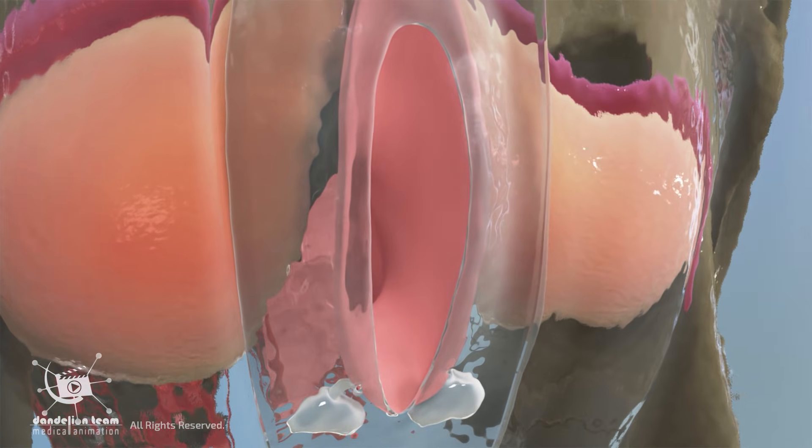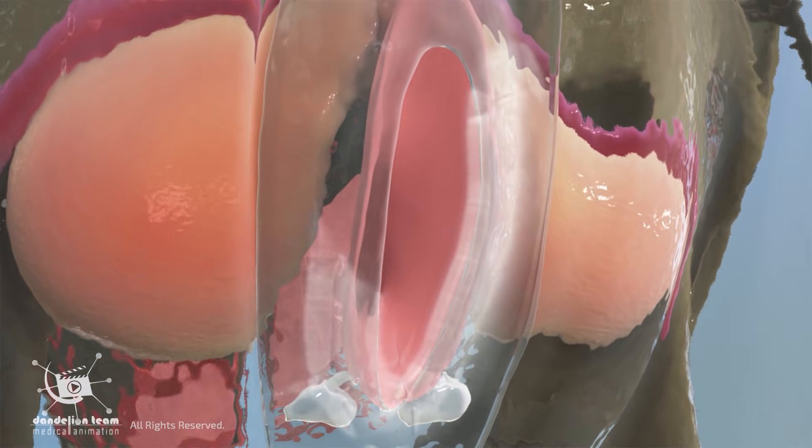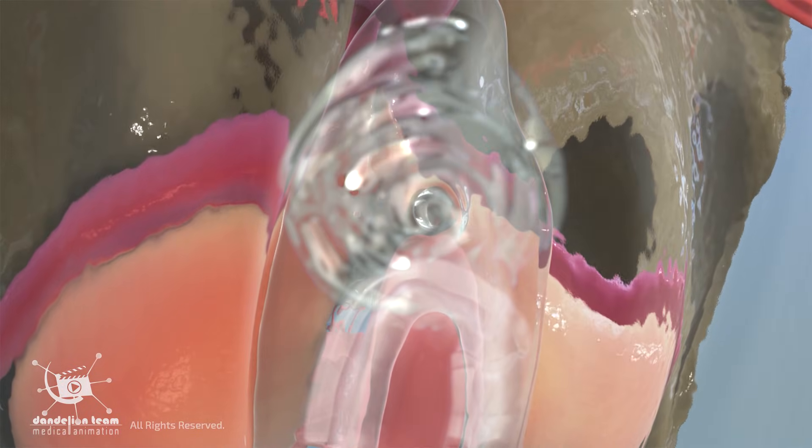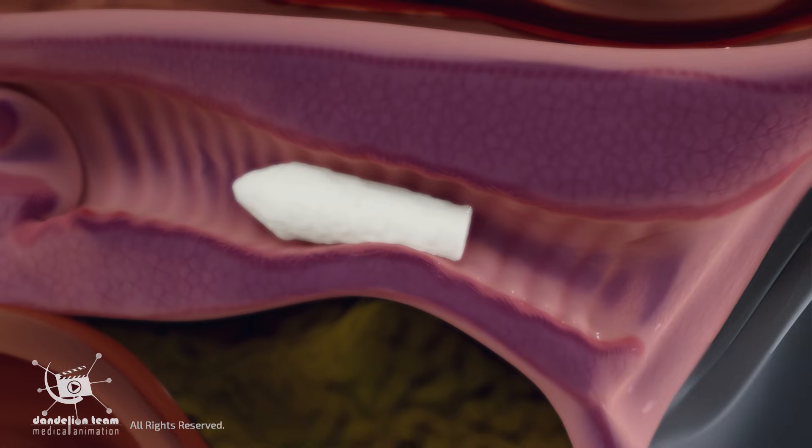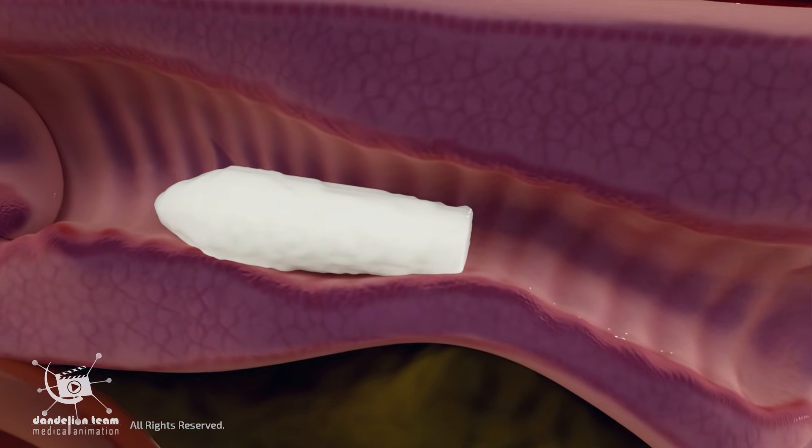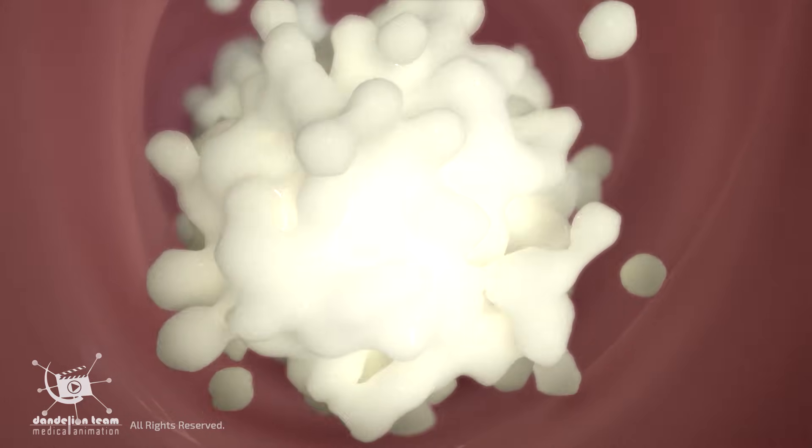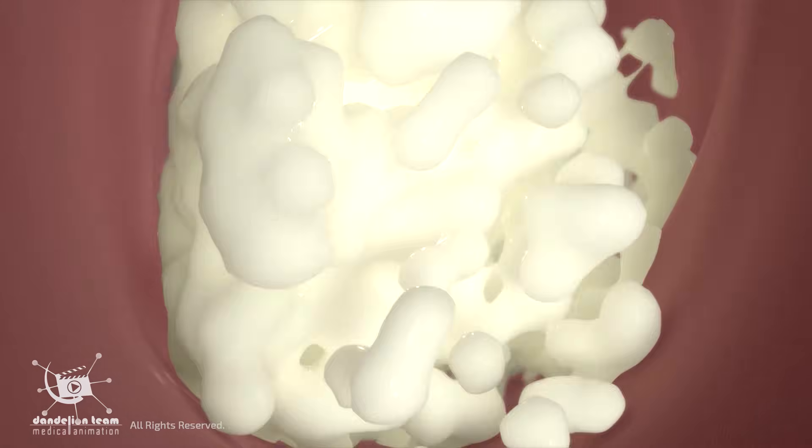External moisturizers are made for the vulva. Suppositories are inserted into the vagina and dissolve, releasing moisture. They can be convenient and long-lasting.